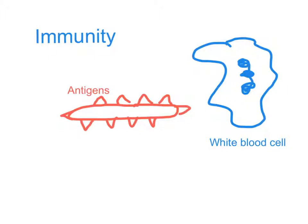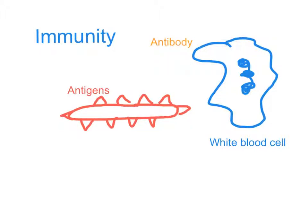So for example it might first produce this shape of something called an antibody. Does that fit on top of there? No, it's the wrong shape so that's no good. So that particular antibody doesn't work. So let's try another shape. Here's another shape of antibody. We're going to try to see if this one will attach onto the antigens of the bacterium. No — those antibodies don't work either.